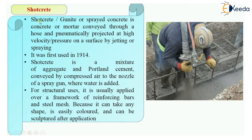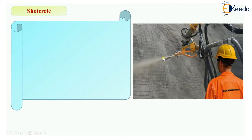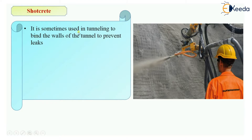So what is shotcrete? It is simply spraying or jetting of concrete pneumatically — by compressed air at high pressure — through a hose pipe. It is sometimes used in tunneling to bind the walls of the tunnel and prevent leaks. It is widely used in tunnel construction because we don't want any leakages, making it best suited for tunnel purposes.